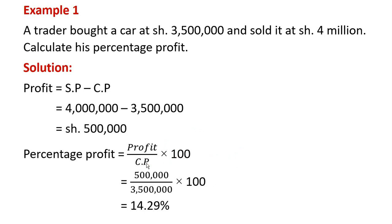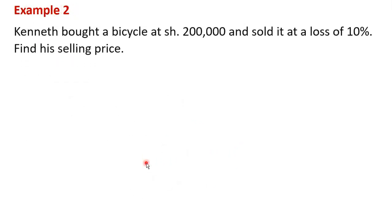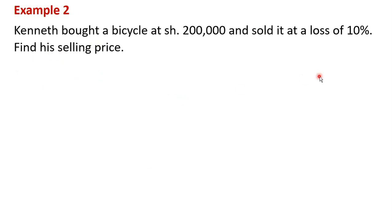Let's look at another example. Example two: Kenneth bought a bicycle at shillings 200,000 and sold it at a loss of 10%. Find his selling price.